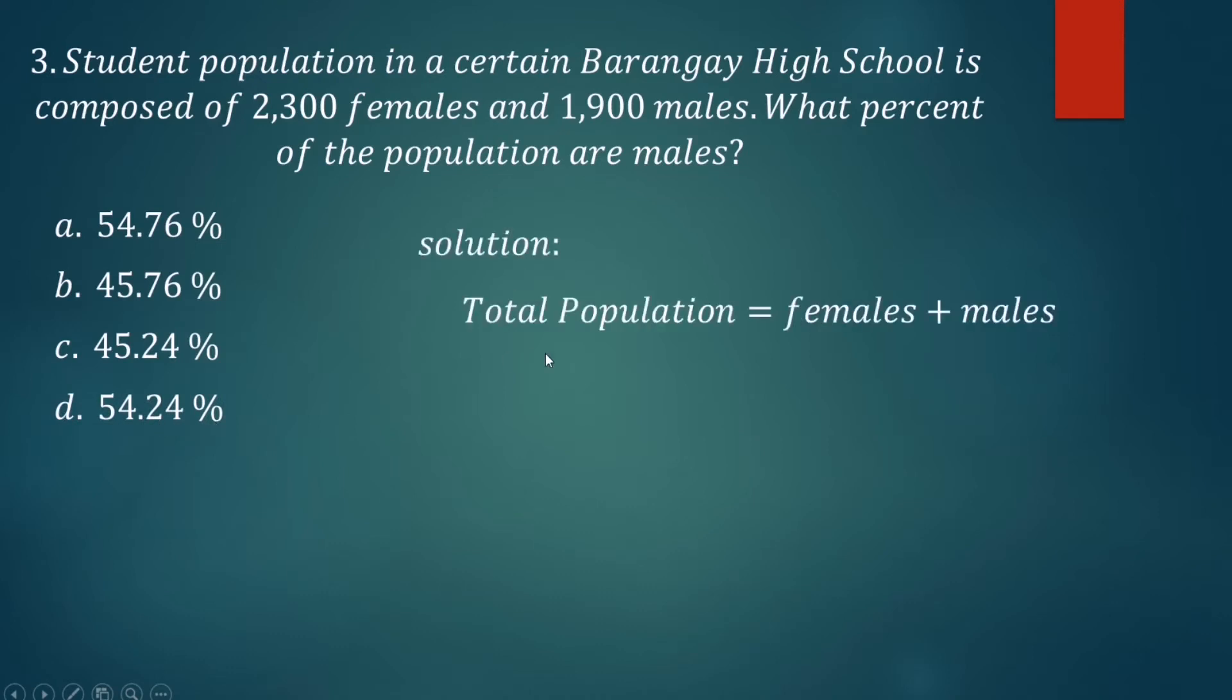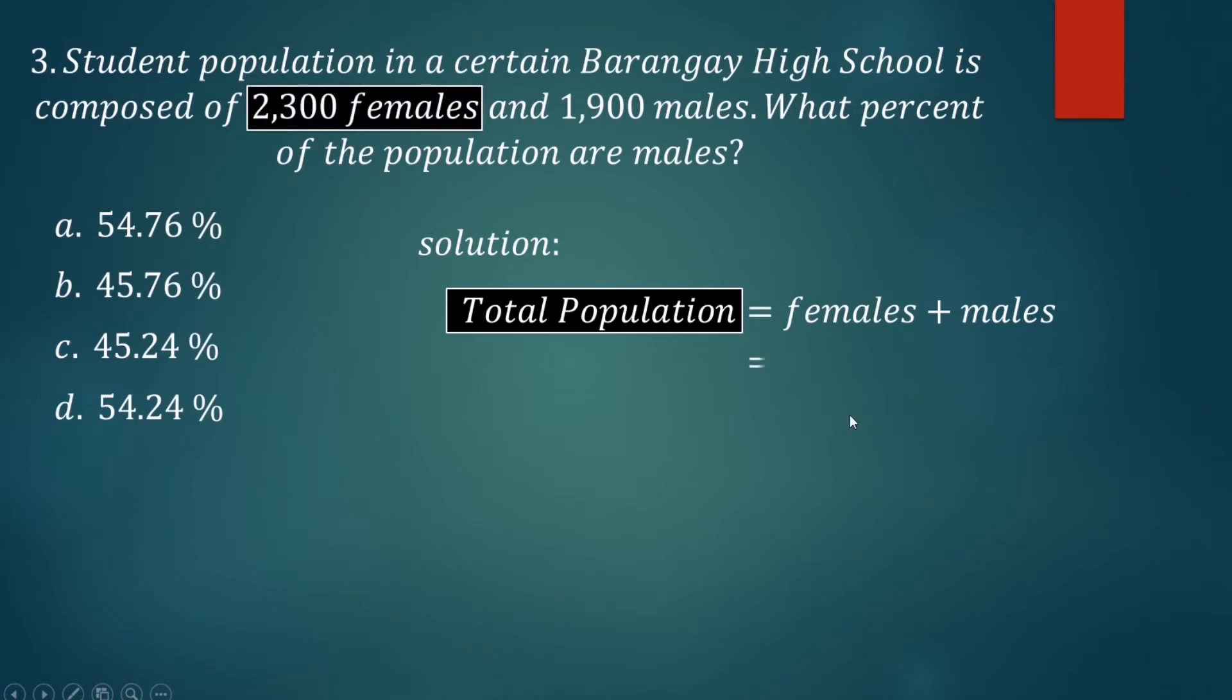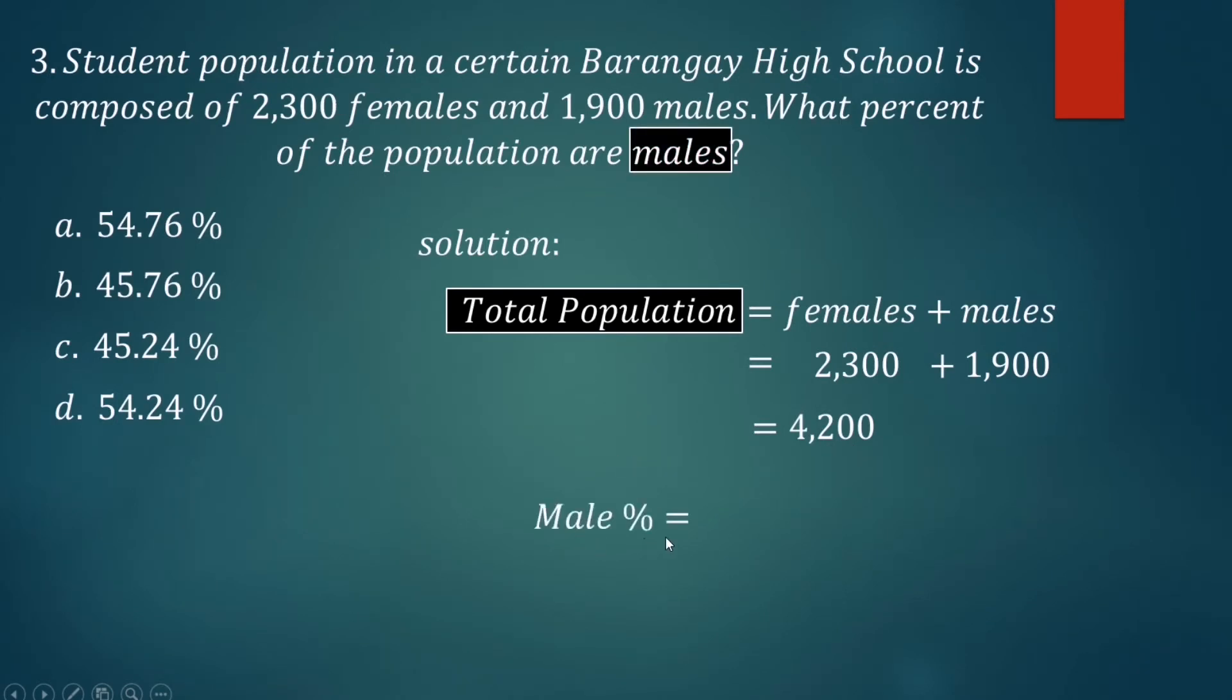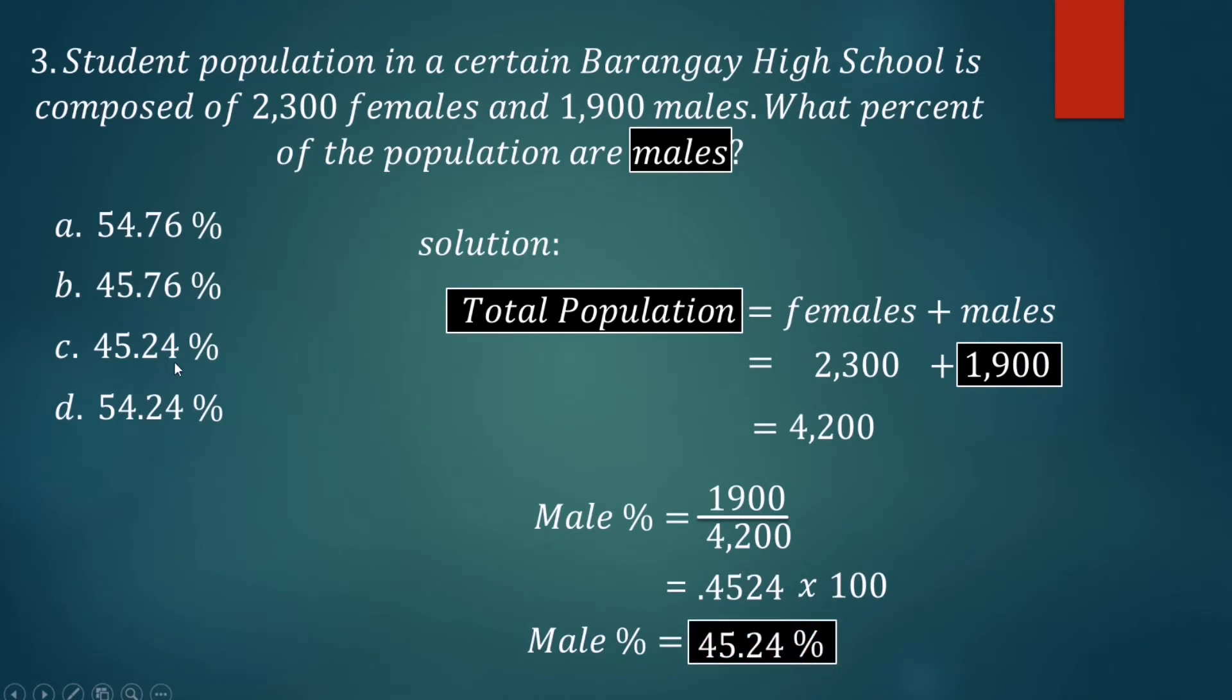Here's the solution: the total population equals females plus males, so 2,300 plus 1,900 equals 4,200. We are asking what percent of the population are males. So we have the male percent: 1,900 divided by the total population 4,200. Get the quotient, that is 0.4524, multiply by 100 for the percent. Or you can use the procedure: move two places to the right from this point - one, two - that is 45.24. Then add the percent sign, that is 45.24%. That is letter C.